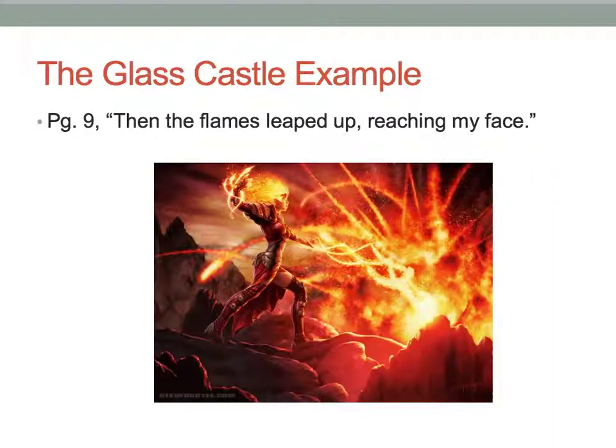On page 9 of the Glass Castle, it says, 'Then the flames leaped up, reaching my face.' This occurs during Jeannette's accident while cooking hot dogs. The ability to reach for something is characterized as a human ability. Fire is a physical object but isn't human, so in reality it can't actually reach for something. Walls uses personification to provide accurate imagery and to display the horror of her situation in a better light. The image on this slide provides a better example of flames actually being able to reach somebody.